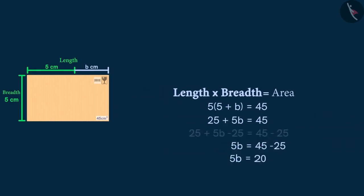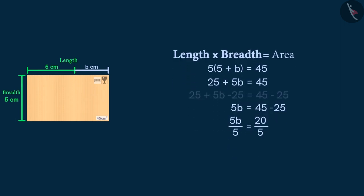Now we will divide both sides of the equation by 5 to get the value of b. On doing so we see that the value of b turns out to be 4. Now we know the length of the parcel is equal to 5 plus b, so that means the length of the parcel is 5 plus 4, which is 9 centimeters.